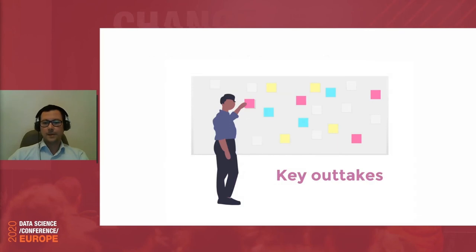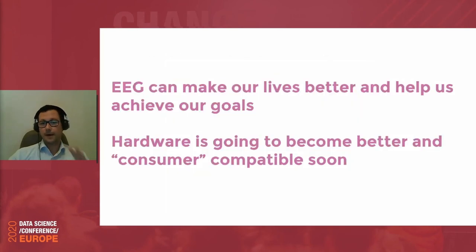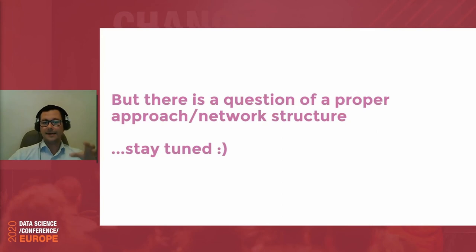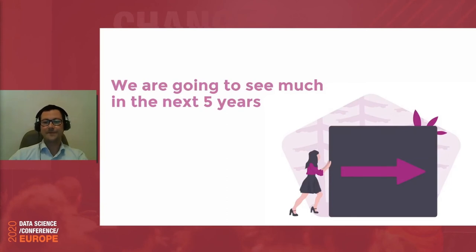Just to end with a few key takeaways: our lives can be significantly better with EEG, and we can achieve our goals more easily. Hardware is going to become better and consumer-compatible soon. There is a huge role for AI in this, and we have made first steps in that direction. There is an open question of proper approach and network structure, but I promise to inform you when we make more progress. Stay tuned — especially in the next five years, I believe this technology is going to become mainstream.